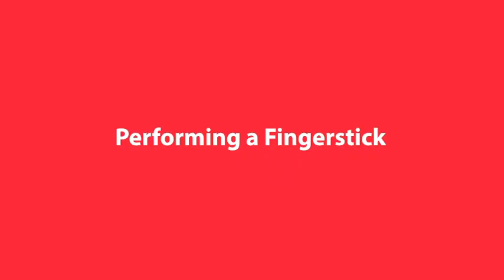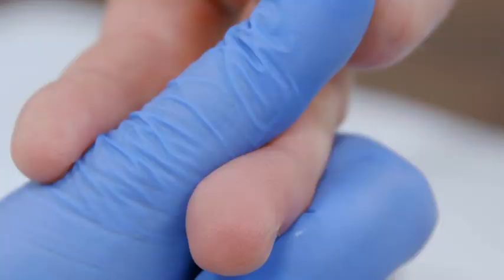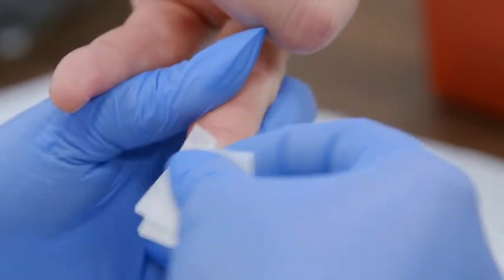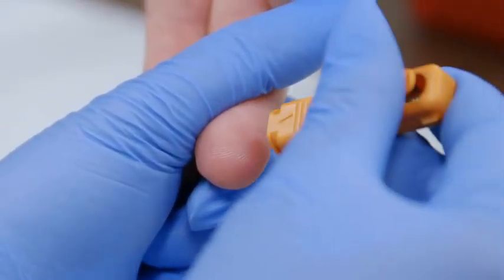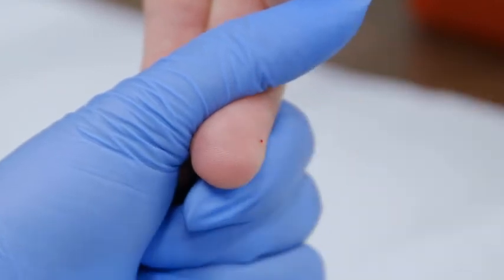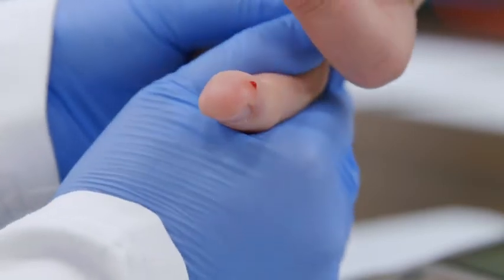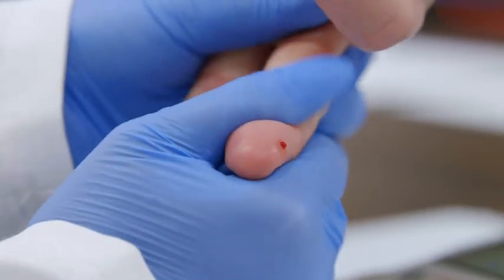Now, perform a finger stick on the patient and collect a sample. Decide whether you will collect the sample from the middle finger or ring finger — you can ask the patient which they'd prefer. Clean the finger with an alcohol wipe and make sure the finger is dry before proceeding. With a new, sterile, disposable lancet, puncture the skin on the side of the fingertip. To get a drop of blood, gently apply intermittent pressure to the finger, starting at the end closest to the hand and moving towards the tip. Do not milk the finger.